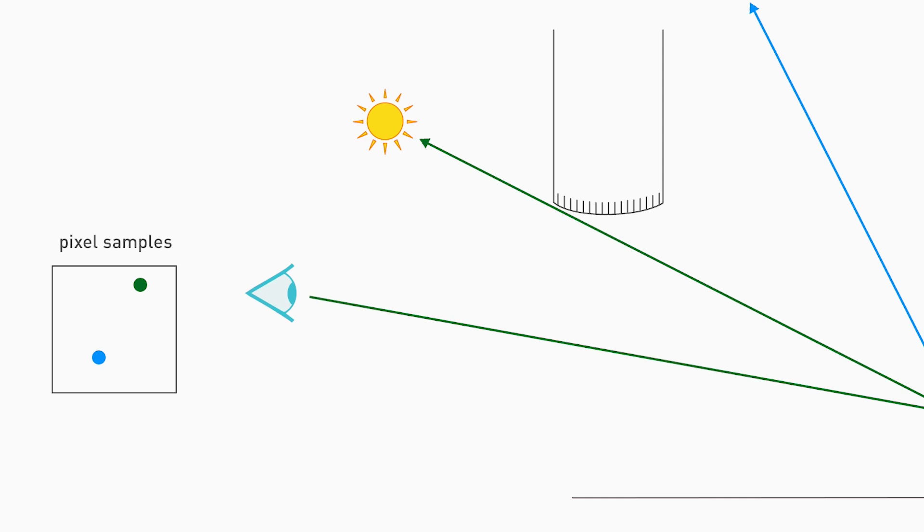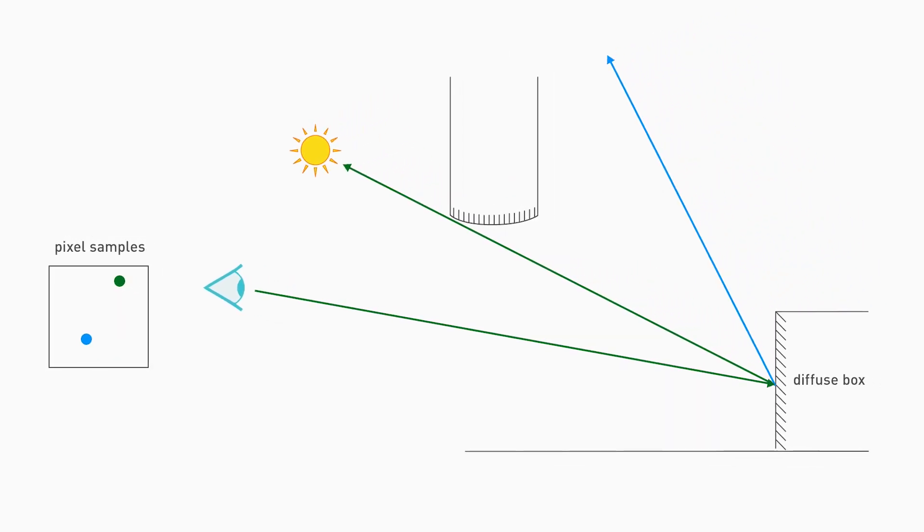This allows you to get anti-aliasing kind of for free, because by moving the samples around within the pixel, you're basically sampling the whole pixel box instead of just the center of the pixel. And so we go.